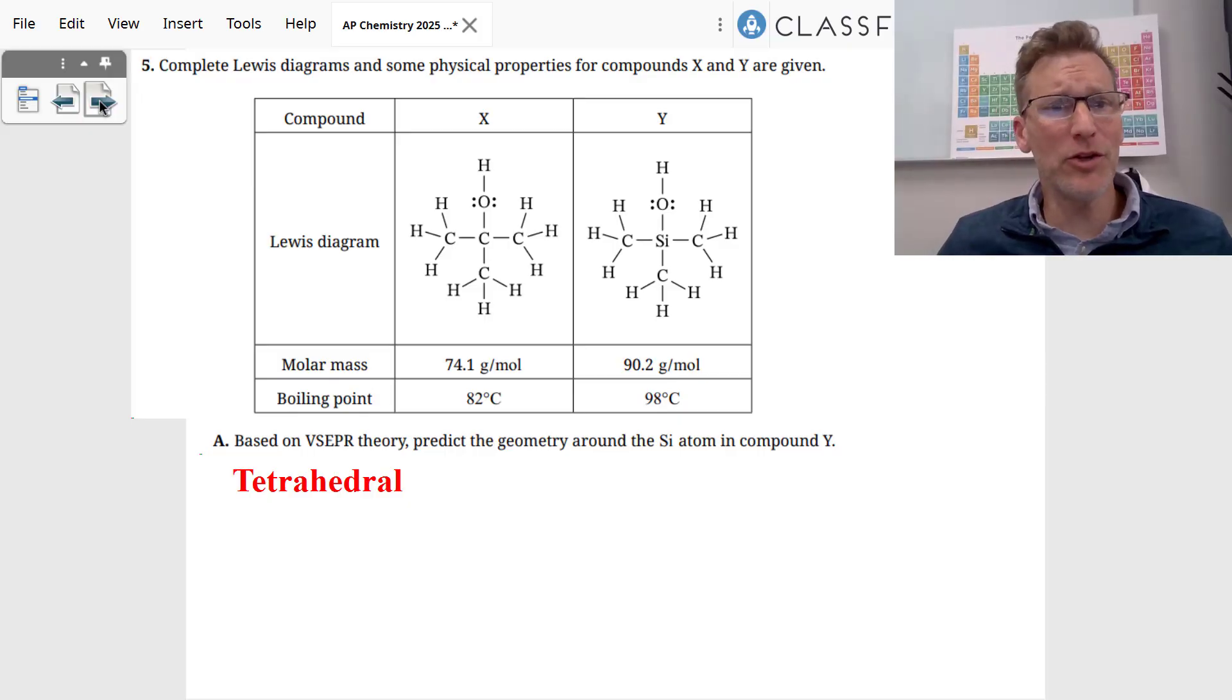The first thing was taking a look at two molecules here, and based on their VSEPR theory, predicted geometry around the silicon atom in compound Y. There's four binding sites, SP3 hybridized, tetrahedral, 109.5 degrees.